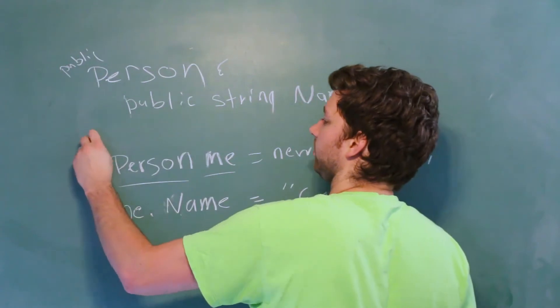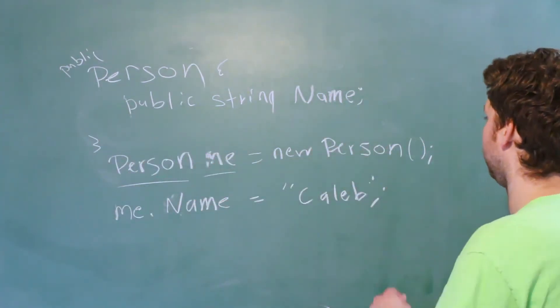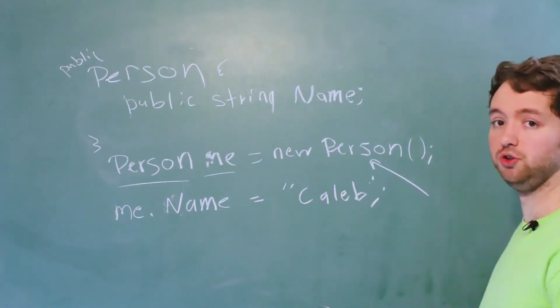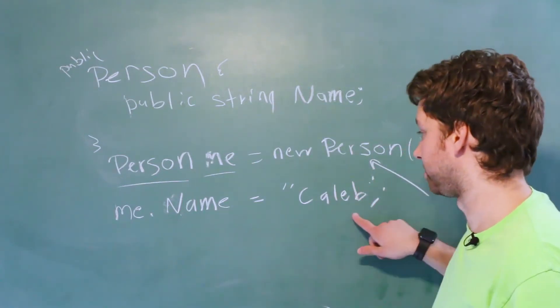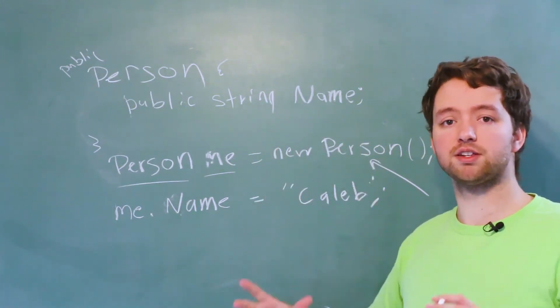Curly braces and so forth. And then this is the instantiation process. When we do this we're instantiating a new person and then when we do this we're assigning a value to that public field. So this is the basis for storing information in our objects.